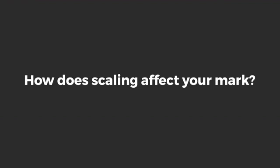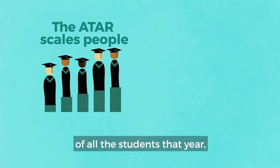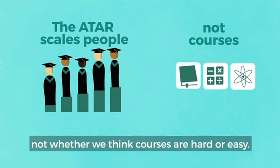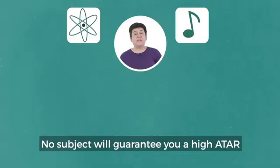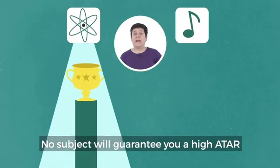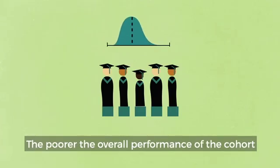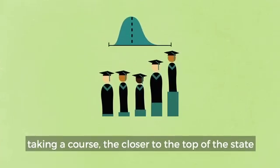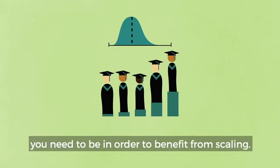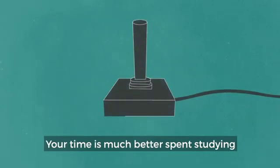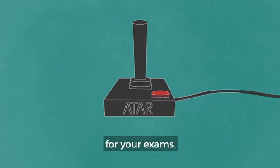How does scaling affect your mark? UAC scales according to the performance of all the students that year, not whether we think courses are hard or easy. No subject will guarantee you a high ATAR, and no subject will condemn you to a low ATAR. The poorer the overall performance of the cohort taking a course, the closer to the top of the state you need to be in order to benefit from scaling. There's no way to game the ATAR system — your time is much better spent studying for your exams.